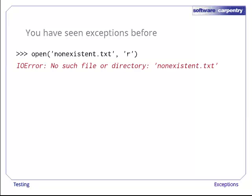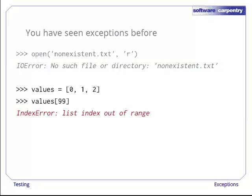You have actually seen exceptions before without knowing it. For example, trying to open a non-existent file triggers a type of exception called an IOError, while an out-of-bounds index to a list triggers an IndexError. By default, when exceptions occur, Python prints them out and halts our program.